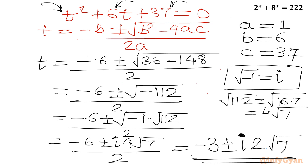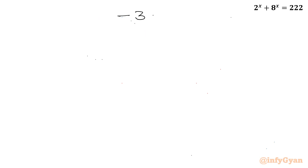So we have all three solutions. The one real solution is t = 6, and the two complex solutions are t = −3 ± 2i√7.